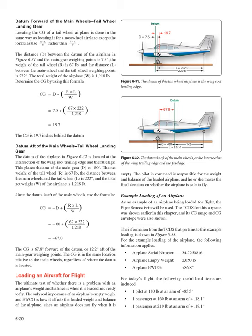Datum Aft of Main Wheels (Tail Wheel Landing Gear): For Figure 6-32, the datum is at the wing root trailing edge and fuselage intersection, placing the main gear arm D at −80 inches. R = 67 lb, L = 222 inches, W = 1,218 lb. CG = −(−80) + (67×222/1218) → using Formula 4: CG = −D + (R×L/W) = −80 + (67×222/1218) = −67.8 inches. The CG is 67.8 inches forward of the datum, or 12.2 inches aft of the main gear weighing points. This confirms that the location of the datum has no effect on the physical CG location if all measurements are made from the same location.